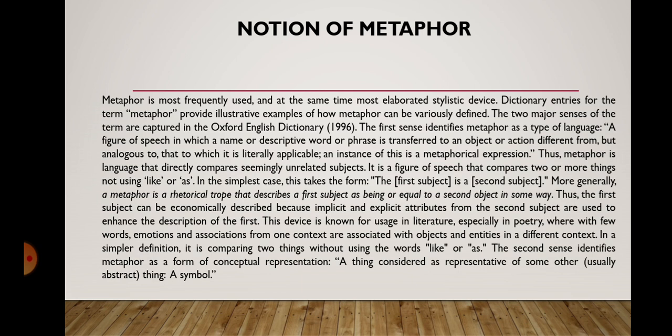More generally, a metaphor is a rhetorical trope that describes the first subject as being or equal to a second subject in some way. Thus, the first subject can be economically described because implicit and explicit attributes from the second subject are used to enhance the description of the first. This device is known for its usage in literature, especially in poetry, where with few words, emotions and associations from one context are associated with objects and entities in a different context. In a simpler definition, it is comparing two things without using the words 'like' or 'as.' The second sense identifies metaphor as a form of conceptual representation — a thing considered as representative of some other, usually abstract thing; a symbol.